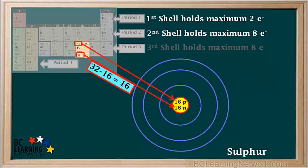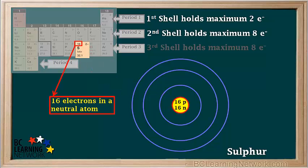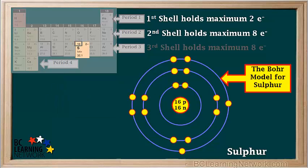The element sulfur has 16 protons and 32 minus 16, which equals 16 neutrons in its nucleus. Sulfur has 16 electrons in a neutral atom, which can be arranged like this. So here's the Bohr model for sulfur. It has two lone pairs at right angles to each other and two unpaired electrons at right angles to each other, as shown here. This model is commonly used for sulfur.